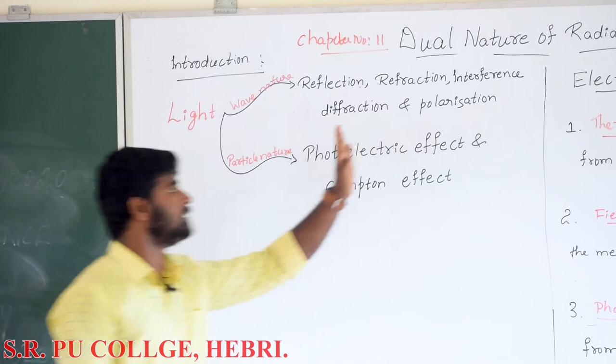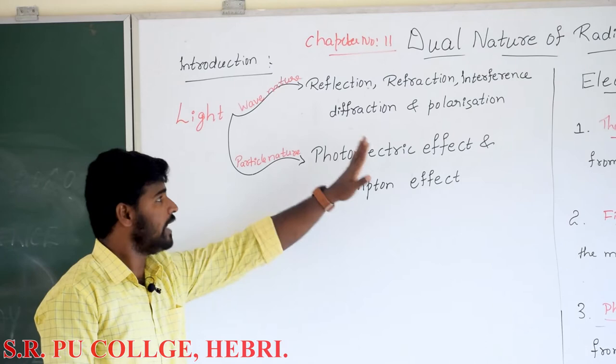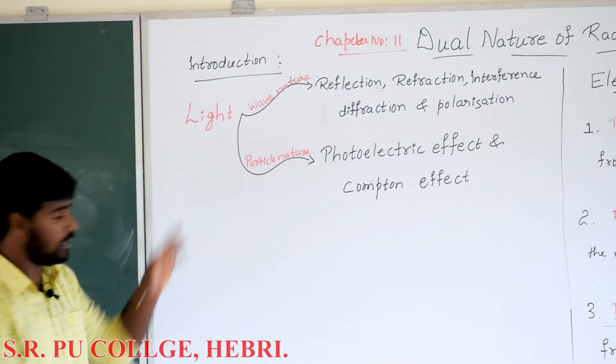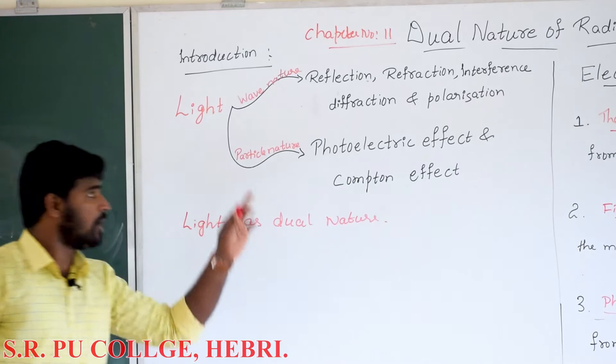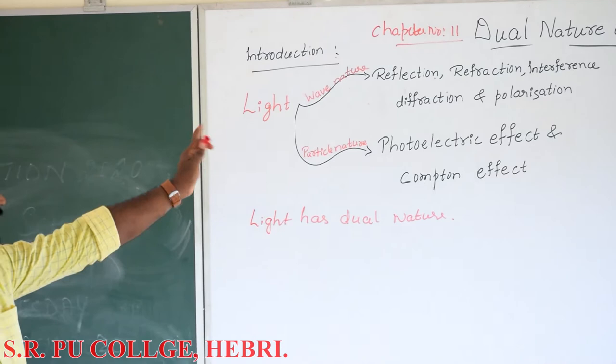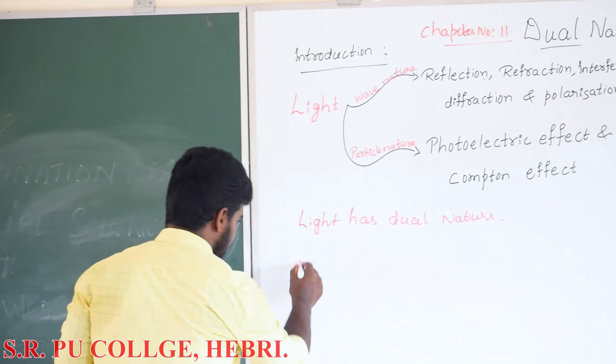From the theory of reflection, refraction, interference, diffraction and polarization, that explains the wave nature of light. The theory of photoelectric effect as well as the Compton effect explains the particle nature of light. Thus light has dual nature, and that is the reason why this chapter is titled Dual Nature of Radiation and Matter.